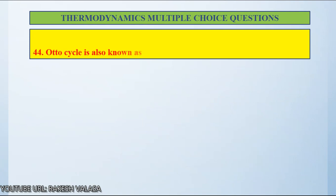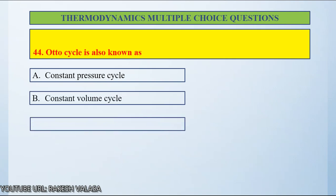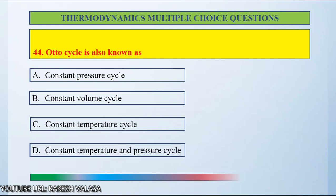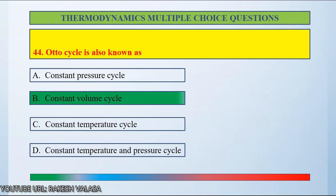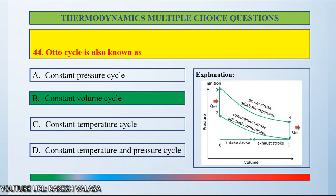Question number 44: Otto cycle is also known as — Option A: constant pressure cycle, Option B: constant volume cycle, Option C: constant temperature cycle, Option D: constant temperature and pressure cycle. The answer is constant volume cycle. You can also see the PV diagram — 2 to 3 is constant volume heat addition, and 4 to 1 is constant volume heat rejection.